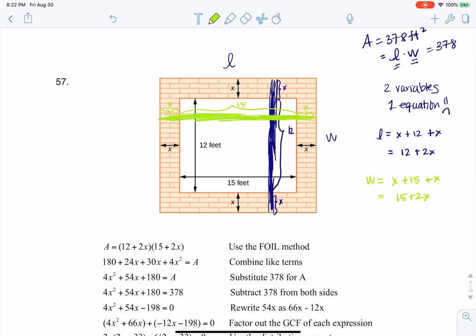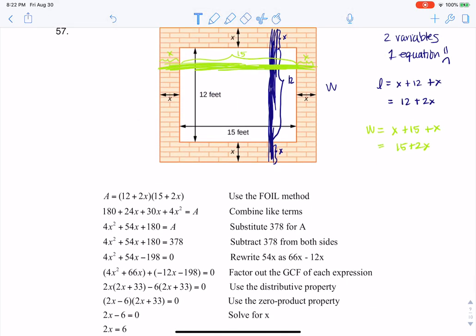So all of a sudden, I can substitute these into this length times width equation. I know that the area, instead of it just being length times width, I know it is 12 plus 2x times 15 plus 2x. And then if I foil that out, collect like terms, I'm at the fact that 4x squared plus 54x plus 180 is the area, but I also know that the area is 378.